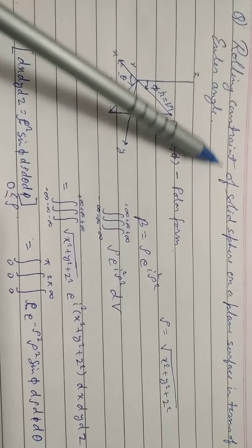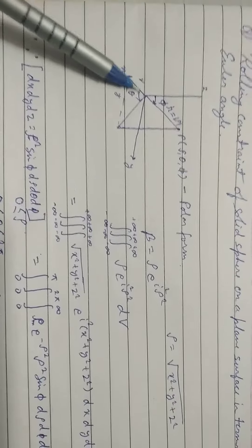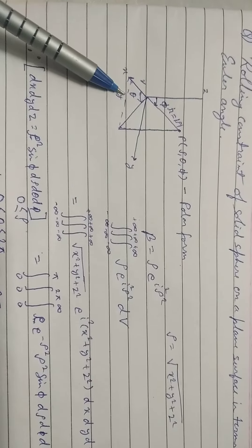Hi friends, today's topic is rolling constant of a solid sphere on a plane surface in terms of Euler's angle. This is angle phi, this is angle theta.